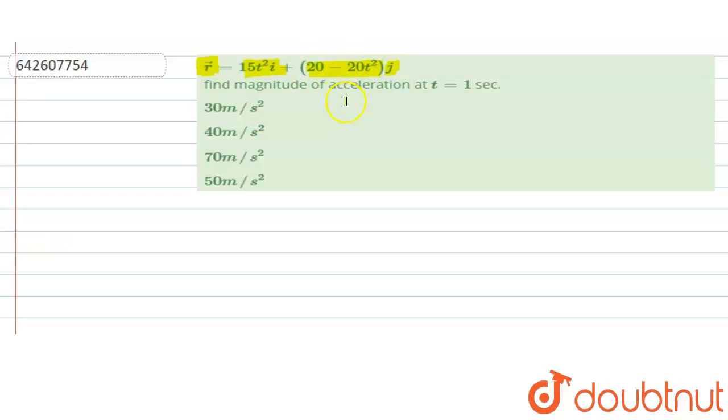We have to find the magnitude of the acceleration vector at time t equals 1 second among the given following options.